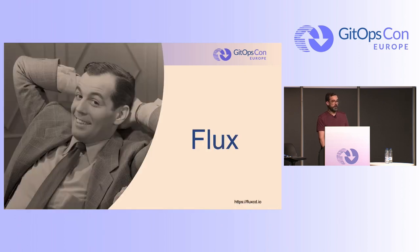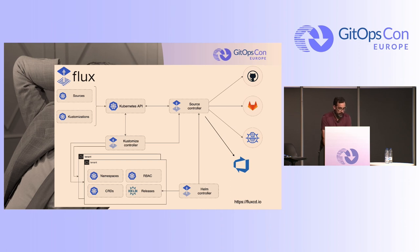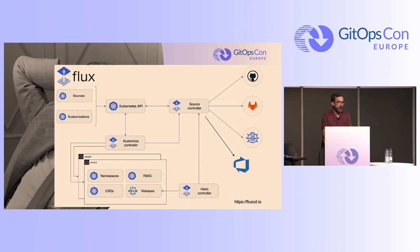We started with Flux V1, and for a while now we've been using Flux V2, which brings us a few controllers: a source controller to handle all our Git repositories, a Kustomize controller that applies Kustomize on those Git sources and creates the Kubernetes resources themselves, and a Helm controller to take care of the Helm releases and perform all the Helm operations we need to install our Helm releases.